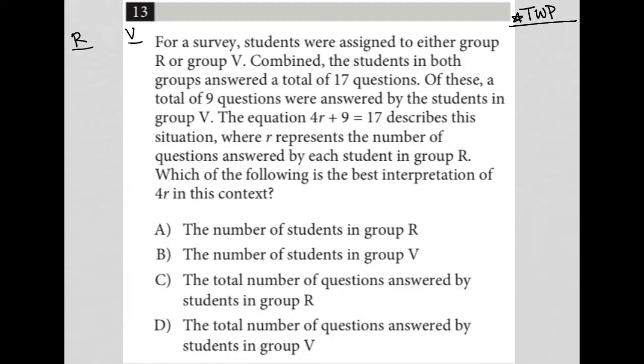Combined, the students in both groups answered a total of 17 questions. So, I'm going to just say down here somewhere, R plus V equals 17 questions. Of these, a total of nine questions were answered by the students in group V. So, I'm going to put a nine under my V there, which means, of course, that group R had to have answered eight questions because eight plus nine is 17.